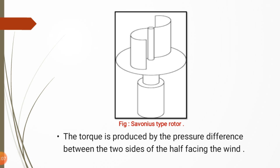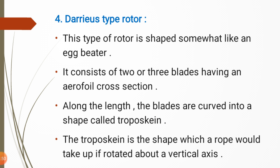Torque is produced by the pressure difference between the two sides of the half facing the wind. When the wind flows toward the shape, the concave part creates maximum pressure while the convex outer side has less pressure. Due to this pressure difference, there is a motion of the rotor. This is the basic principle behind the Savonius type rotor.